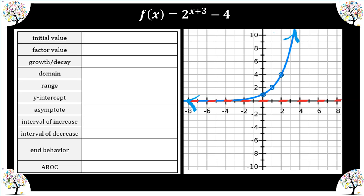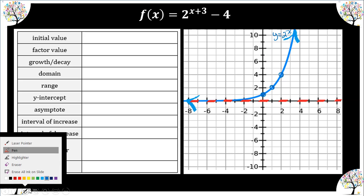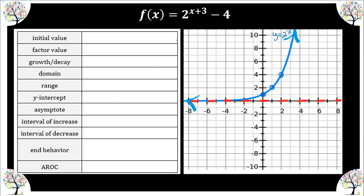Here we have our parent function y = 2^x and we're going to transform it without a table of values and without a calculator. We are going to shift 3 to the left and then shift 4 down.